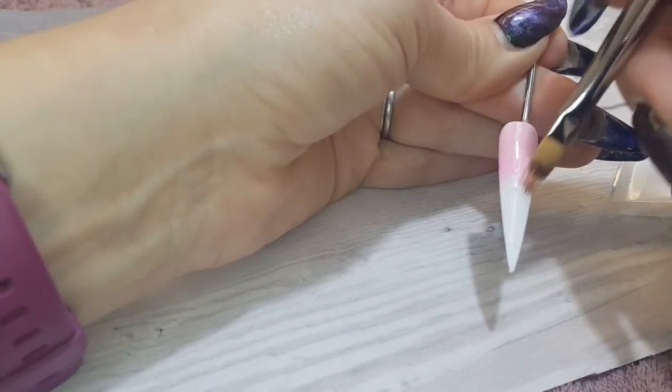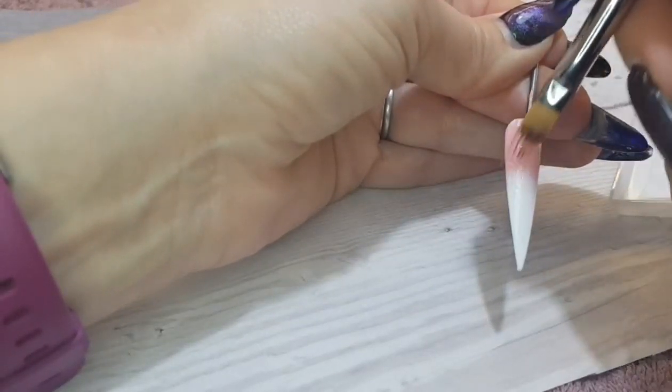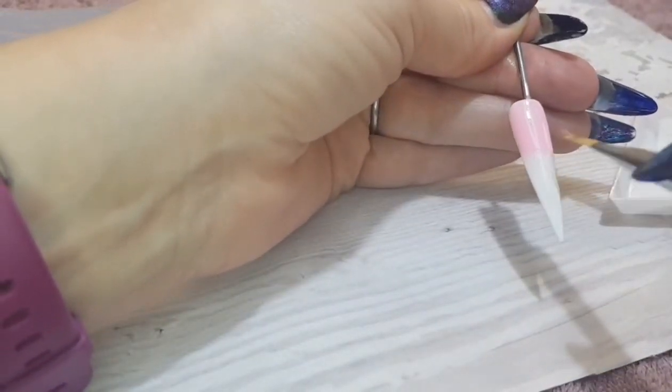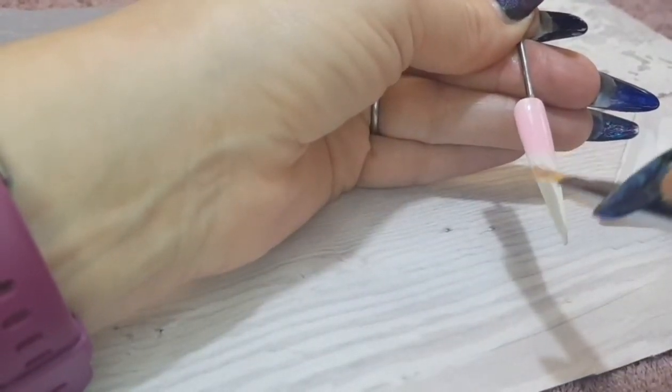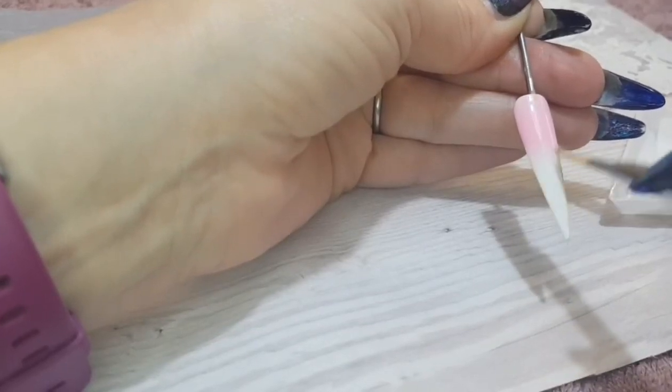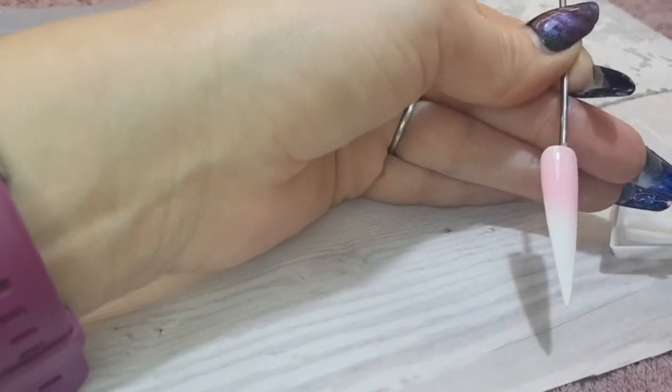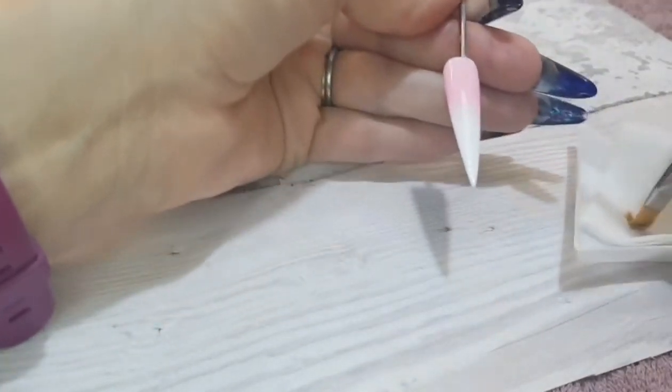Then with your Ombre brush, really light strokes again just to blend the two colors together. And then back in the other direction, cleaning off my brush a little bit in between with the cleanse.